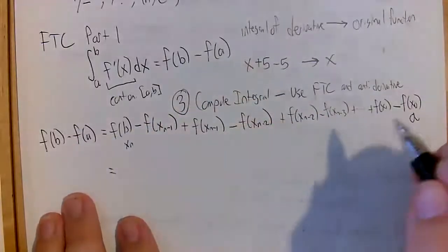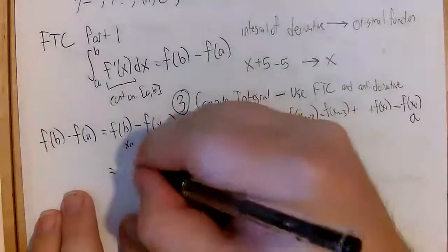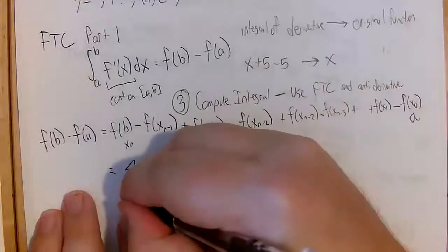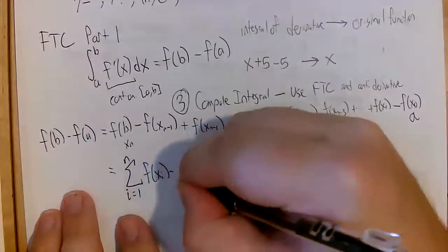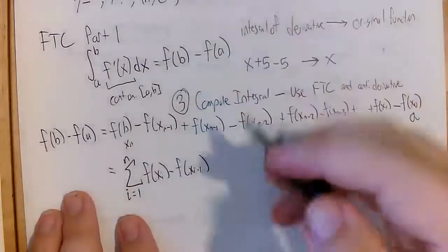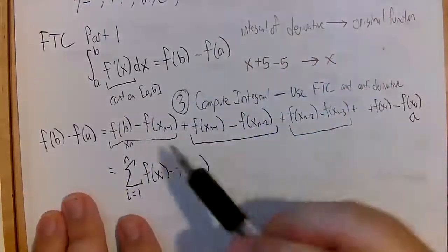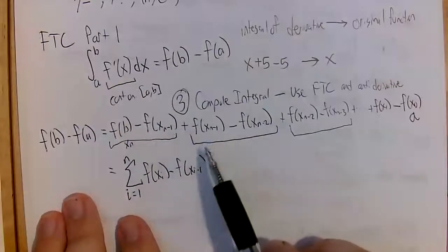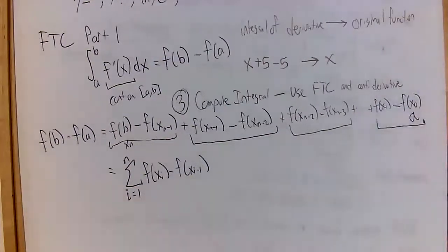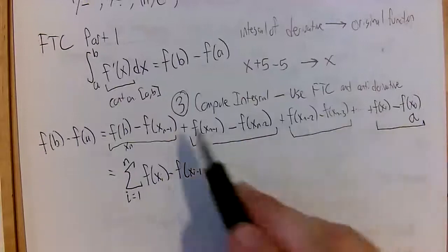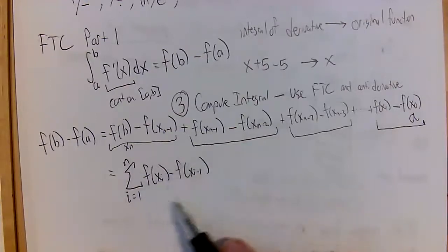Let's write this in a more compact way using sigma notation. The sigma notation is: sum from i equals 1 to n of f of x_i minus f of x_{i-1}. We have all these pairs of differences: f of x_n minus f of x_{n-1}, f of x_{n-1} minus f of x_{n-2}, all the way down to f of x_1 minus f of x_0. The pattern is two function values subtracted, with the second having a lower x value.